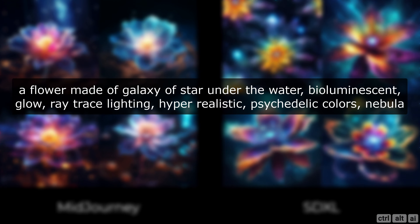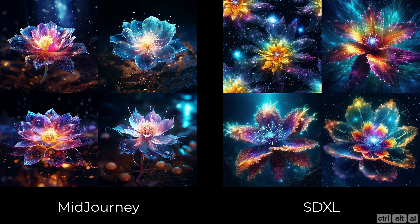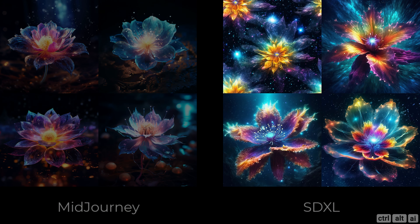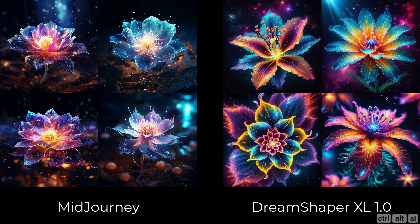Prompt: a flower made of a galaxy of stars under the water, bioluminescent, glow, ray trace lighting, hyper realistic, psychedelic colors, nebula. Just a note: all images for MidJourney are in version 5.2 with a style value of 200. The ones which I personally prefer will be highlighted. Comparing a modified prompt version of the same image using DreamShaper XL checkpoint — all checkpoints are available on CivitAI.com.